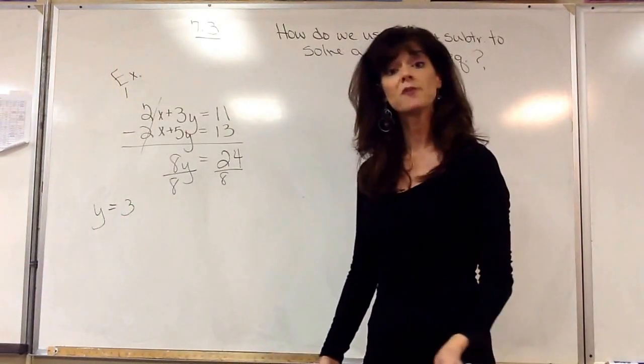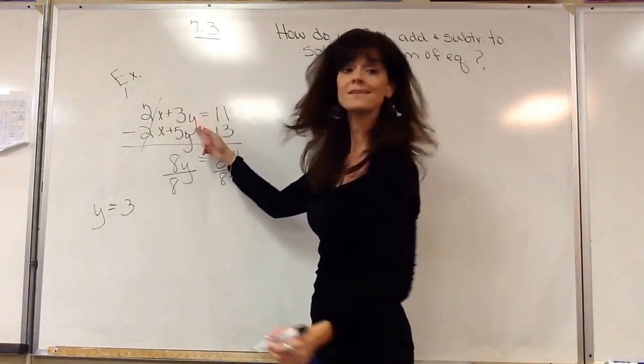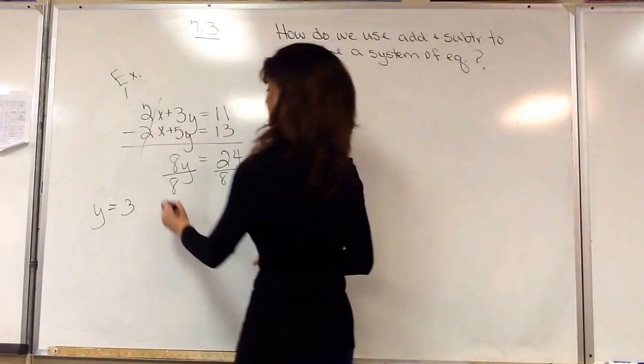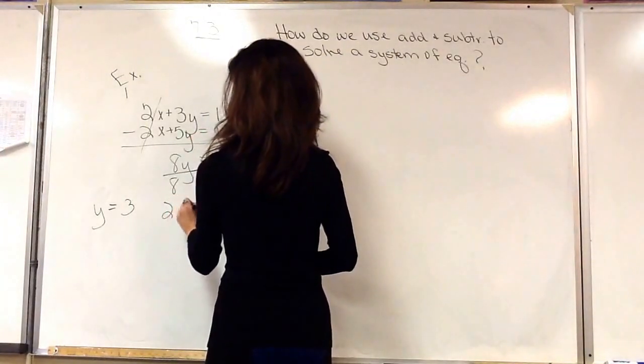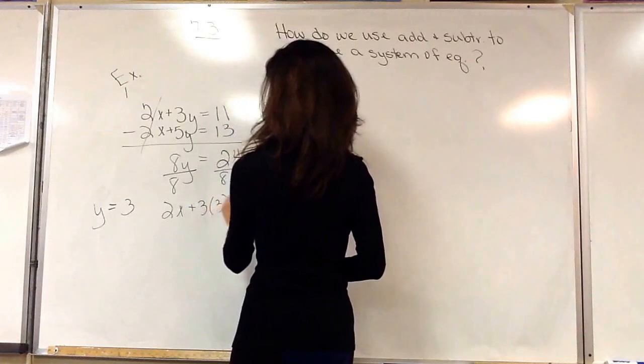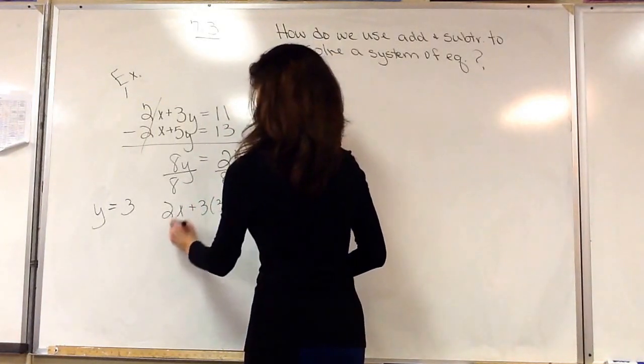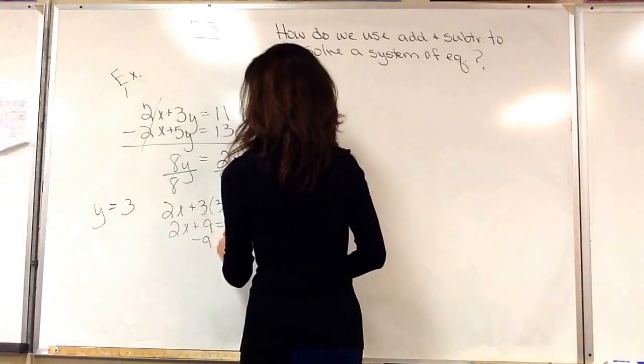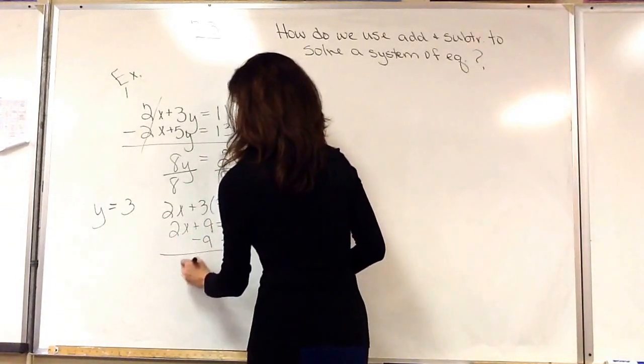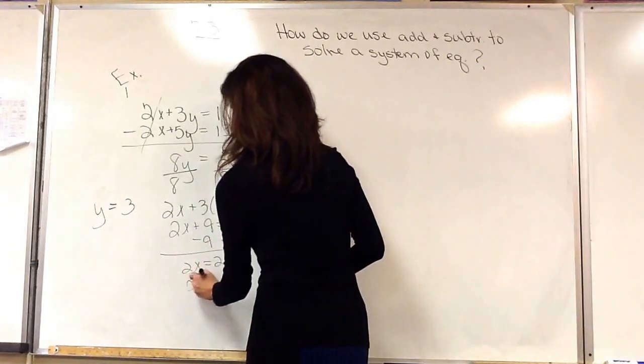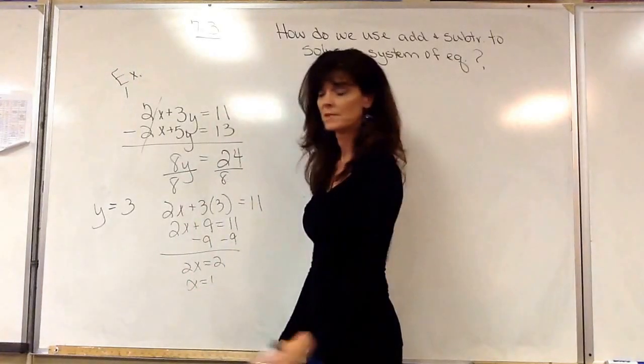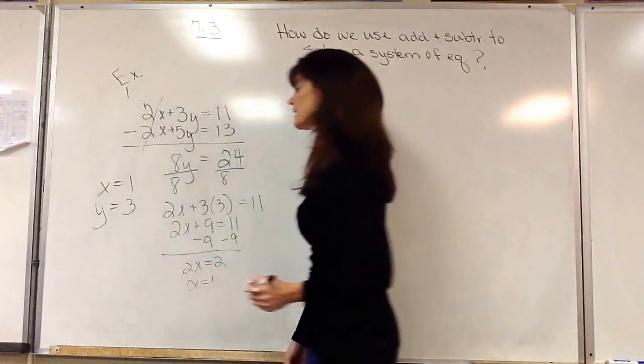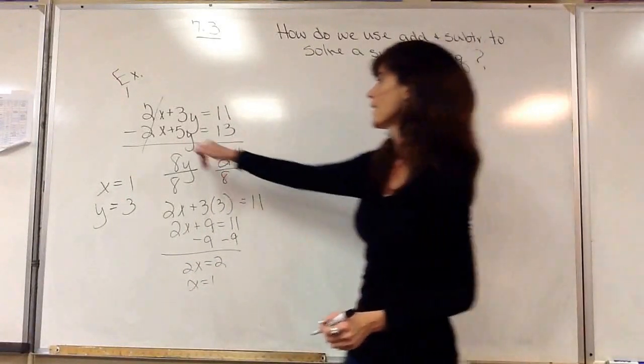And then of course I'm going to solve for x by substituting the y into either equation and solving for x. So 2x plus 3 times 3 equals 11. 2x plus 9 equals 11. We're going to subtract that 9. 2x equals 2 and x equals 1. So we see here x equals 1 and y equals 3.